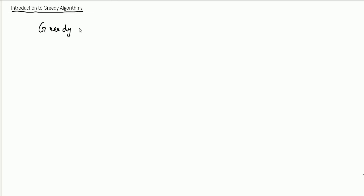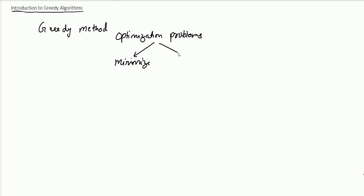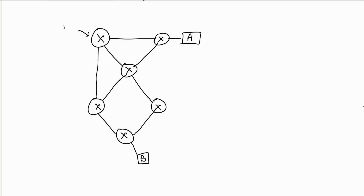We will start with greedy algorithms. The greedy method is used to solve optimization problems — problems in which you either want to minimize something or maximize something.